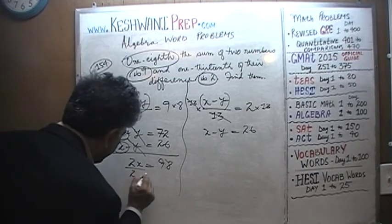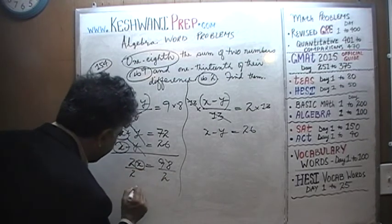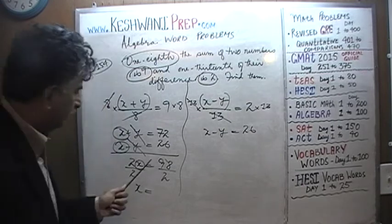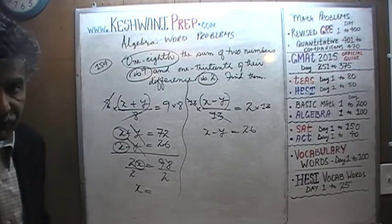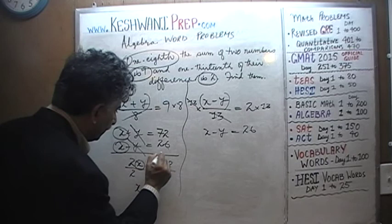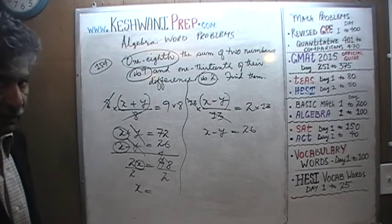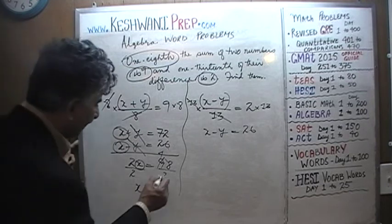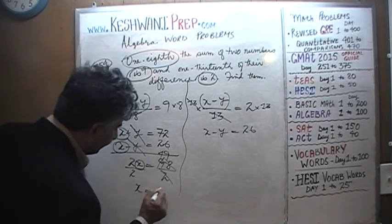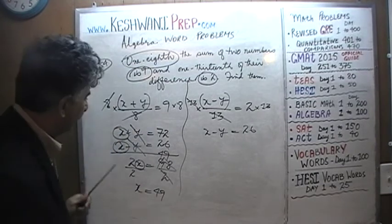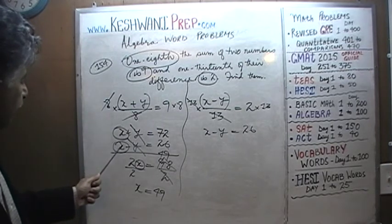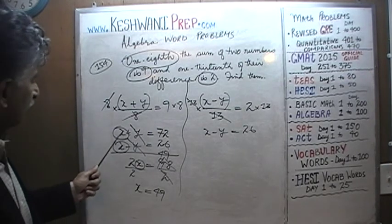Divide both sides by 2, and we'll have the X by itself. X will equal 98 divided by 2. How many 2's does 9 have? 9 has 4 twos, the remaining one goes and joins the 8 and becomes 18, and 18 has 9 twos. So X equals 49. Now we have to figure out the Y. Either one of these two equations will do.